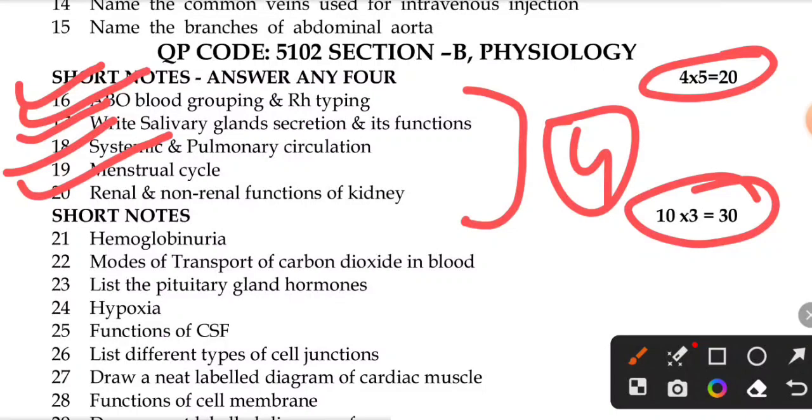Short notes on hemoglobinuria, modes of transport of carbon dioxide in the blood, list the pituitary gland hormones, hypoxia, and functions of CSF.